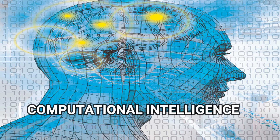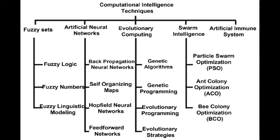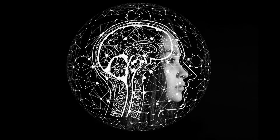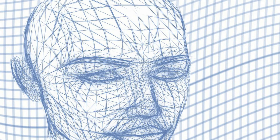Computational intelligence. The expression computational intelligence usually refers to the ability of a computer to learn a specific task from data or experimental observation. Even though it is commonly considered a synonym of soft computing, there is still no commonly accepted definition of computational intelligence.